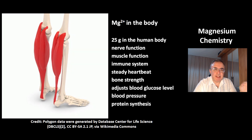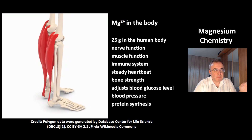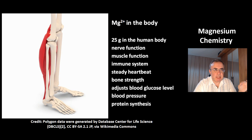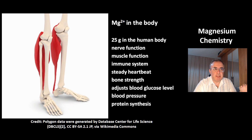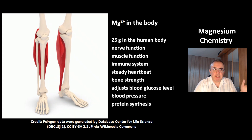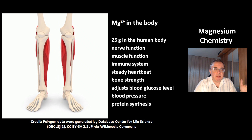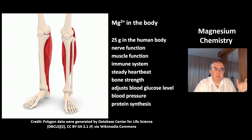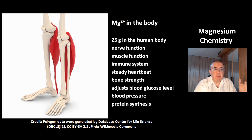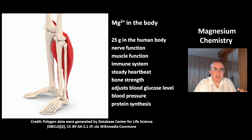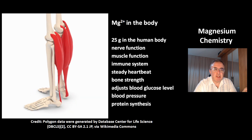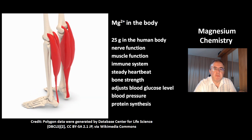Magnesium has an essential function in the human body — 25 g of magnesium is found in the human body. It is essential for nerve function, muscle function, immune system, steady heartbeat, and bone strength. It helps adjust blood glucose levels and blood pressure, and it's essential for the synthesis of proteins.